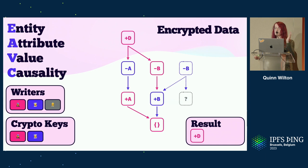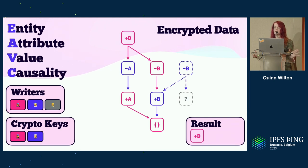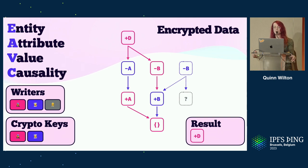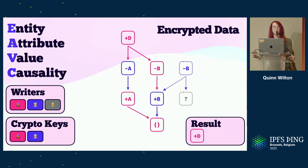We also have a design for querying over encrypted data, where certain readers may only have access to certain writers. In this example, the reader doesn't have the decryption key for the gray events, and so they're unable to satisfy the causal links for any of their downstream dependencies — the resulting set only contains the letter D. In a sense, we're treating encrypted data as a special case of network partition: rather than some data being unreachable due to network failure, it's unreachable as a side effect of not having been granted the required decryption keys.